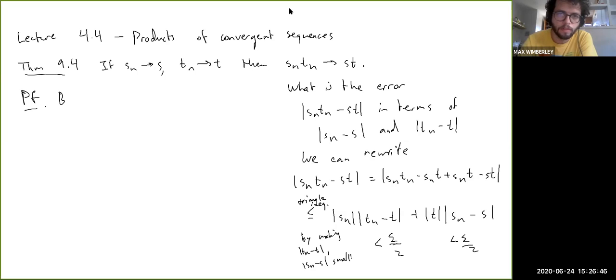So, okay, first of all, let epsilon be greater than zero. Now by 9.1, remember theorem 9.1, which was about the boundedness that says that convergent sequences are bounded. There exists an m greater than zero, such that Sn is less than m for all n. So there's that. Now take epsilon.